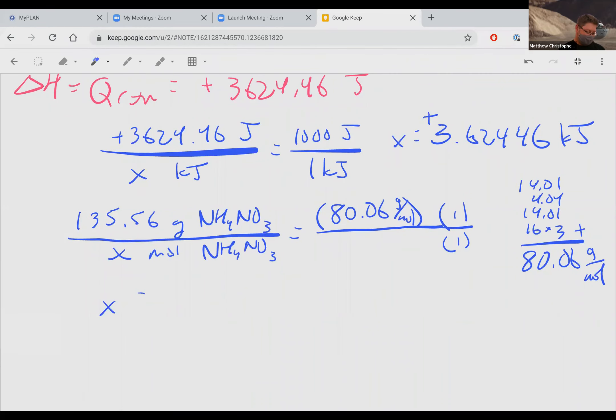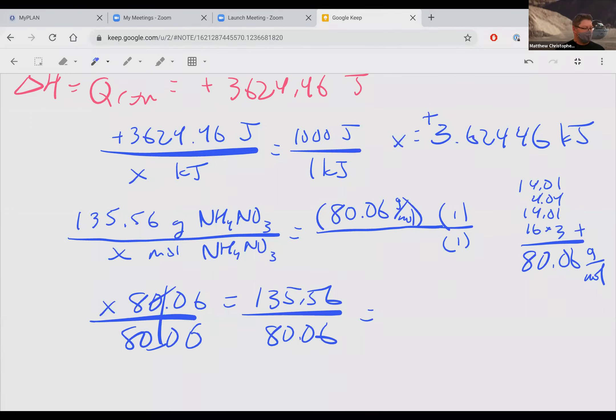And then x times 80.06 equals 135.56. Divide both sides by your 80.06. And this one here, 135.56 divided by that whole thing. I think I made a mistake there. Should be almost two, but not quite. Looks like it. We got a value of 1.69323. That's the amount of moles of chemical we added.